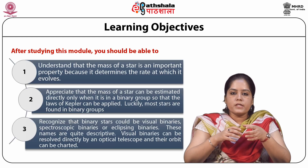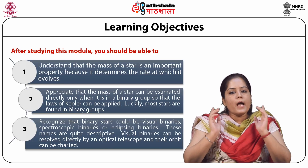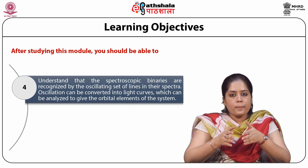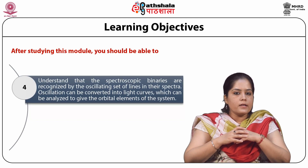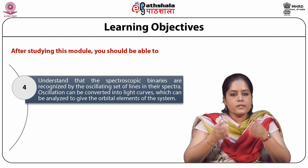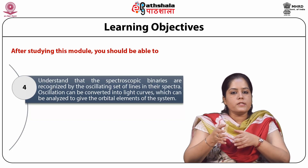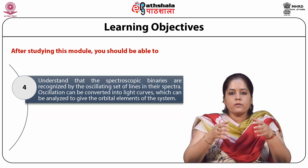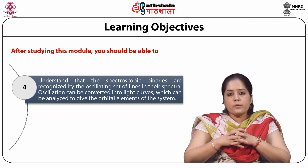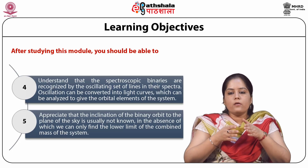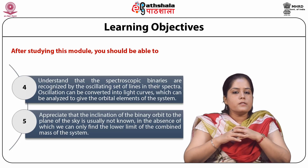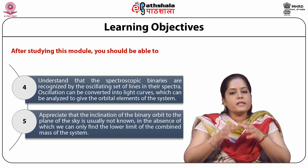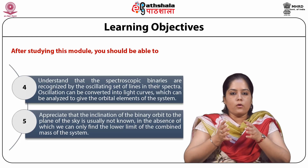Visual binaries can be resolved directly by an optical telescope and their orbit can be charted. Spectroscopic binaries are recognized by the oscillating set of lines in their spectra. These oscillations can be converted into light curves, which can be analyzed to give the orbital elements of the system.